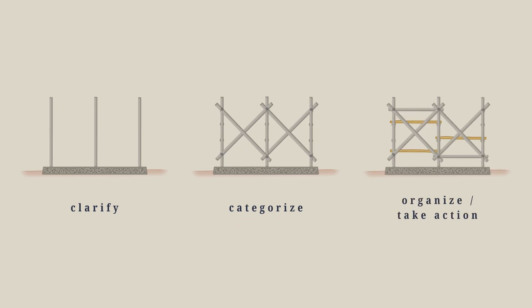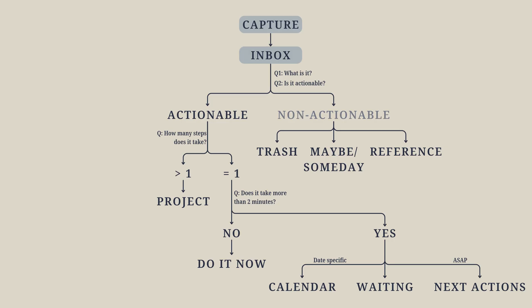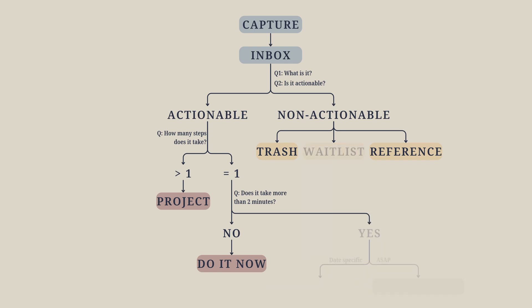These questions help us determine where each item belongs. Finally, we move into organize or take action. This is where the platform comes into play. These surfaces allow us to stand and work efficiently, just as organizing lets us create a system where tasks and information are easily accessible and manageable. Once organized, there are eight possible outcomes for each item. If it's not actionable, it might go into the trash, be deferred into the maybe or someday list, or filed as a reference. If it is actionable, it can be categorized into five groups. I've tweaked this grouping slightly to fit what works best for me, so feel free to do the same as you develop your own system.